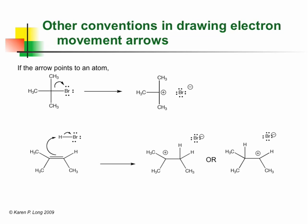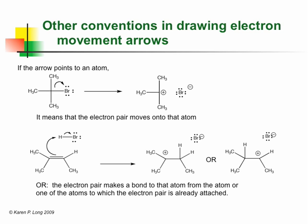When you are looking at electron movement arrows that other people have drawn, they should always point from the electron pair to its new location. Here are some varieties. We've seen the arrow pointing from a bond to an atom in our alkyl halide example. This means the electron pair moves onto that atom. Pointing to an atom could also mean that the electron pair bonds that atom to one of the atoms originally connected by the electron pair, as in the example with the alkene and the HBr.